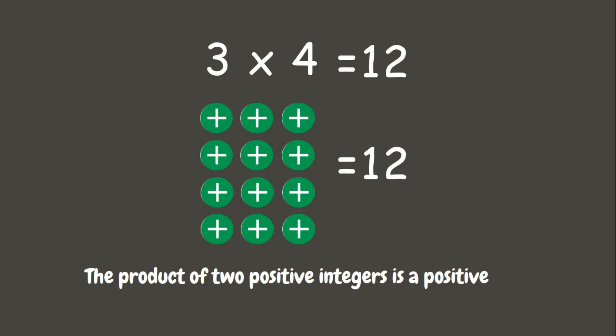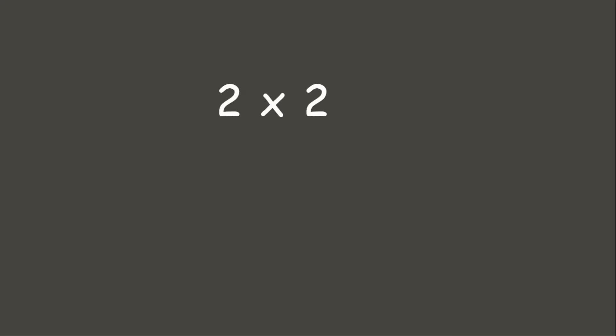we get 12 positives. This means that when we are multiplying 2 positive integers, our answer will be a positive integer. Now let us try some more. This time, let's try to solve positive 2 times positive 2. Again, let us remember that when we are multiplying 2 positive integers, our answer would be positive. So, let us multiply.